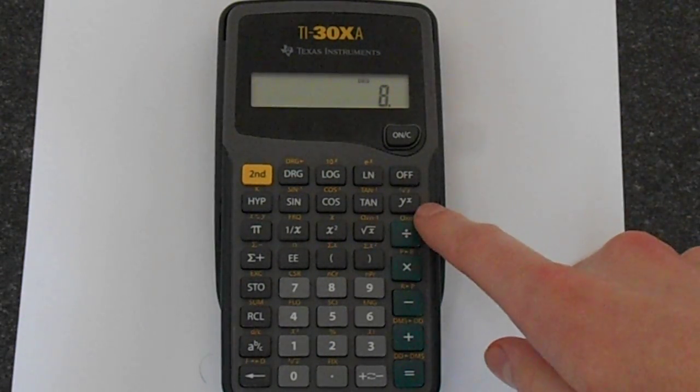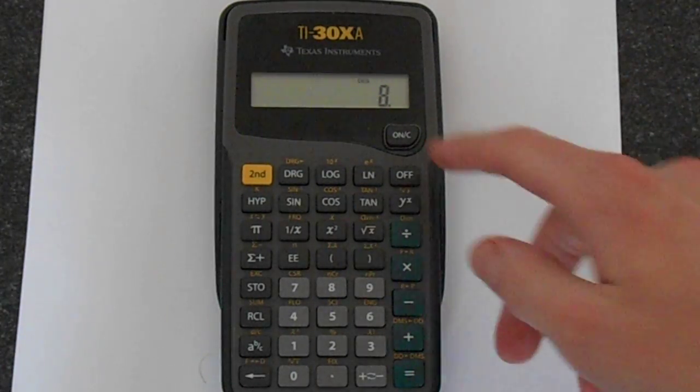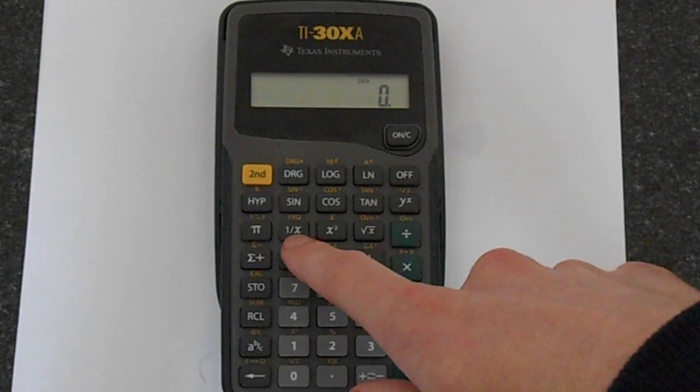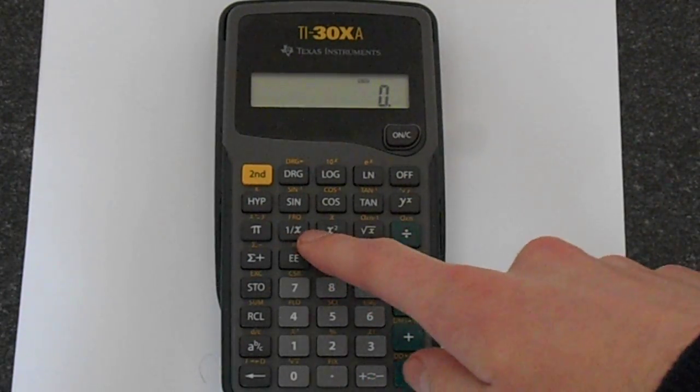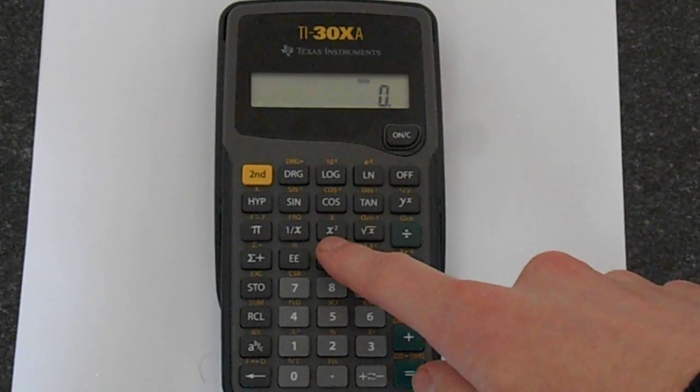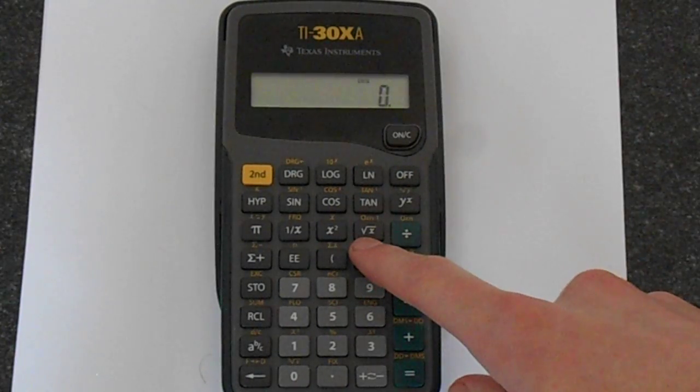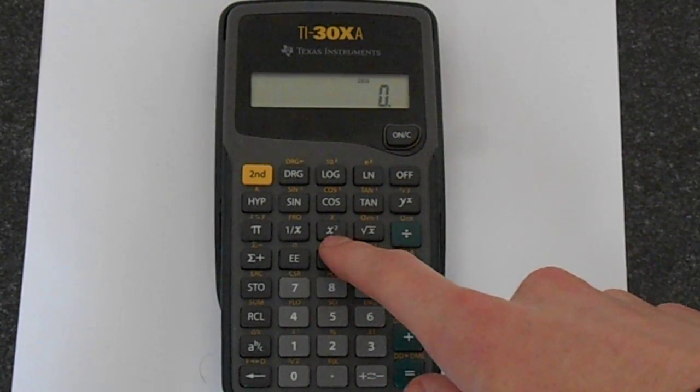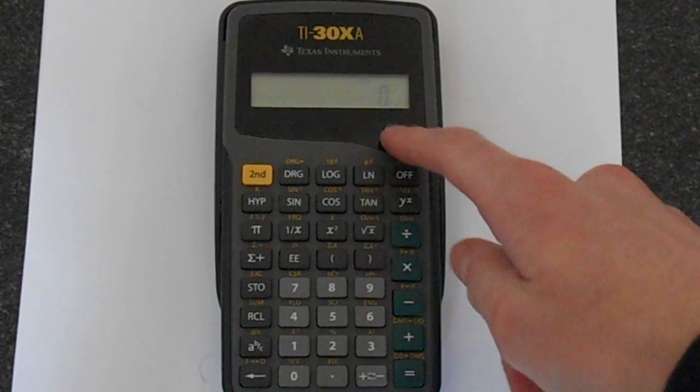So that's how to do powers other than 2 or minus 1 rather. There are some built-in powers here. If you look on this row here you've got 1 over x, you've got x squared and root x. So that's the power of minus 1, squared, and the power of a half.